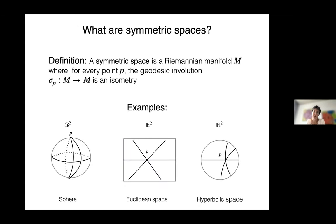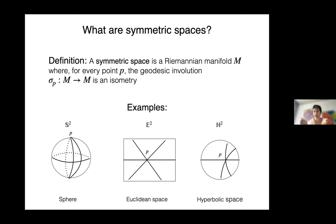A symmetric space is a Riemannian manifold with many symmetries: every point gives rise to an isometry via the geodesic involution, mapping a point at geodesic distance t on one side of p to the corresponding point at distance t on the other side. The isometry group acts transitively, so every neighborhood looks the same.